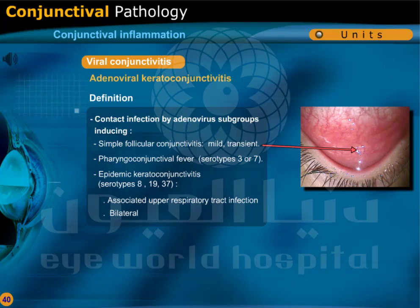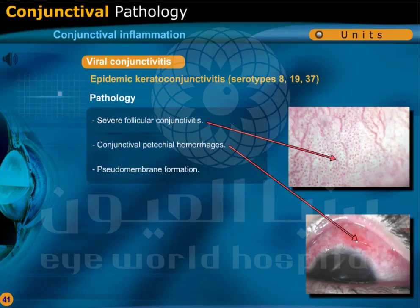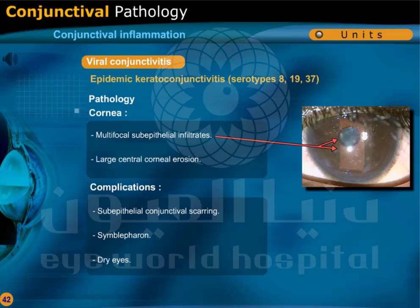Epidemic keratoconjunctivitis is associated with upper respiratory tract infection and occurs bilaterally. It is caused by serotypes 8, 19, and 37. There is severe follicular conjunctivitis, conjunctival petechial hemorrhage, and pseudomembrane formation. The cornea shows multifocal subepithelial infiltrates and large central corneal erosion. It could be complicated by subepithelial conjunctival scarring, symblepharon, and dry eyes.